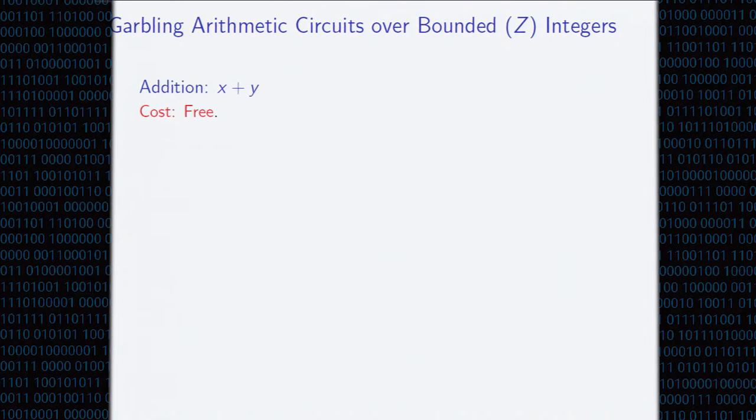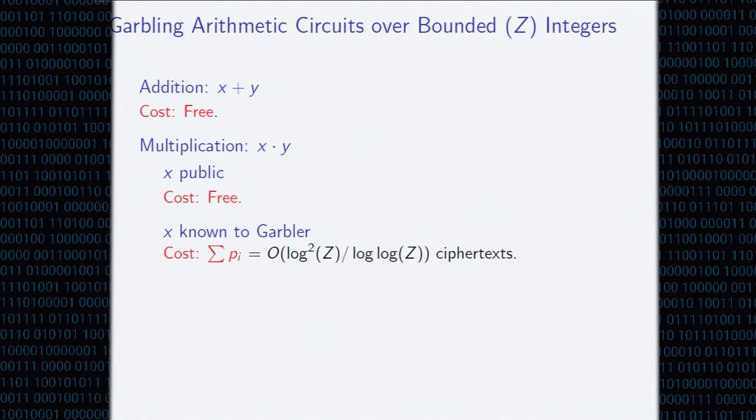So, now, let's look at some of our gadgets. If we want to compute over bounded integers, let's take z as a global bound on intermediate values of computation. Addition is going to be free using the addition gate that I mentioned previously, because the isomorphism I mentioned before, we don't care if we're working over product ring or the actual ring. Multiplication, if x is public to the evaluator and the garbler, then this is going to be free. There's an asterisk here. We have a small additive constant to the entire circuit, but morally free. If x is known to the garbler, then the cost is going to be simply those projection gates, those small projection gates that I mentioned in the last slide. And so it's just going to scale like the sum of the primes.